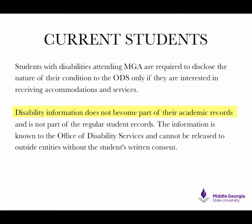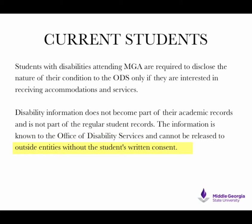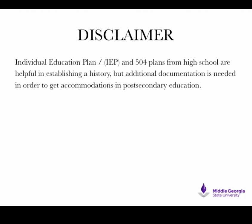Disability information does not become a part of students' academic records and is not part of the regular student records. The information is known to the Office of Disability Services and cannot be released to outside entities without the student's written consent. Disclaimer: Individual Education Plans (IEP) and 504 plans from high school are helpful in establishing a history, but additional documentation is needed in order to get accommodations in postsecondary education.